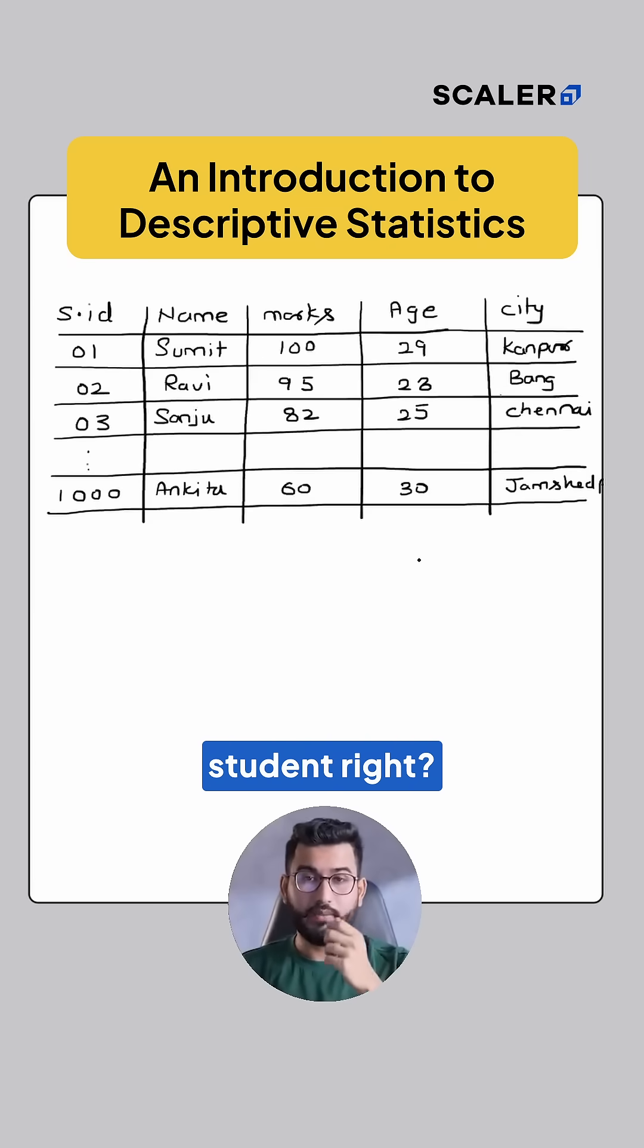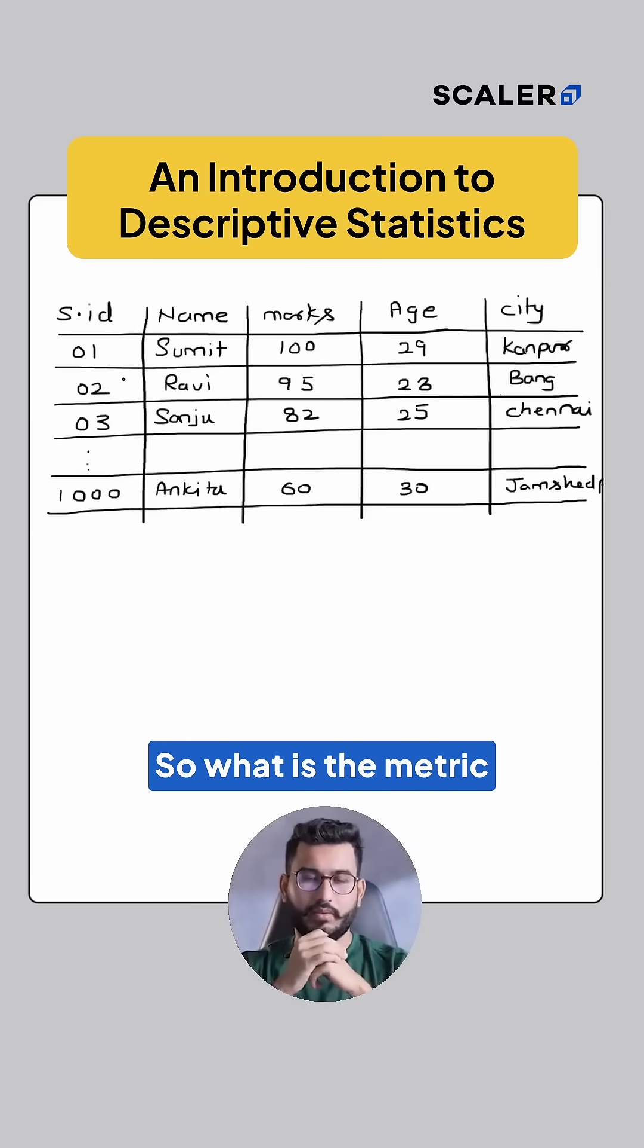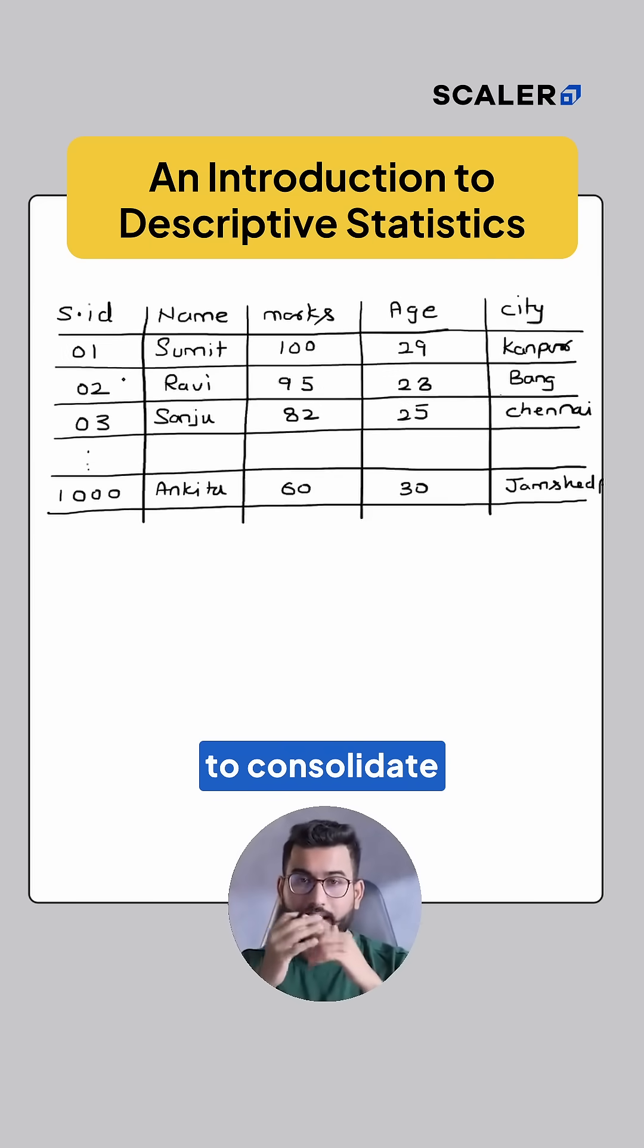Right? So what he or she is looking for is some information that can fully describe the complete class. So what is the metric that we can use to consolidate or to better describe the complete class?